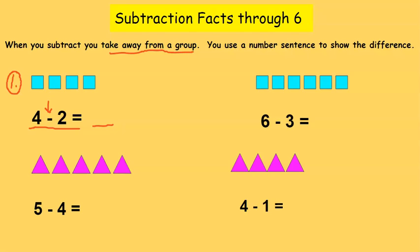Now we know we see a minus sign, so what does that mean? That means we're taking away from the group. We see we have 4 in our group, 4 squares. We're going to take away 2 from that group. Ready, let's do it. 1, 2. How many do we have left over? Let's count them. 1, 2. So we know that 4 minus 2 equals 2.